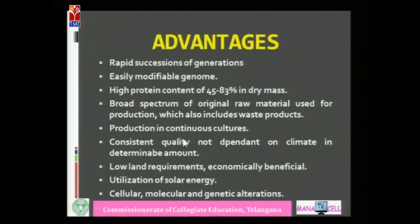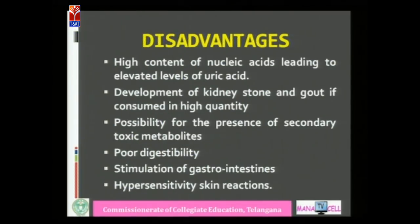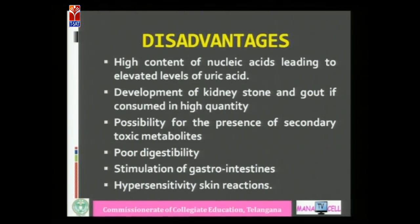Advantages of SCP: it can be grown at a higher rate very easily and has high protein content of 45 to 83%. Production can be continuous, land requirements are low, it is economically beneficial, solar energy is utilized, and we can make cellular, molecular, and genetic alterations in the organism. Disadvantages: high nucleic acid content leads to elevated uric acid, causing kidney stones and gout. There is possibility of secondary metabolites, digestibility issues, stimulation of the gastrointestinal tract, and hypersensitivity skin reactions.